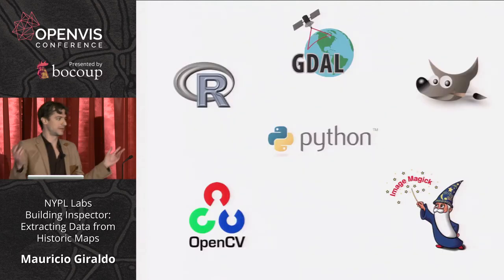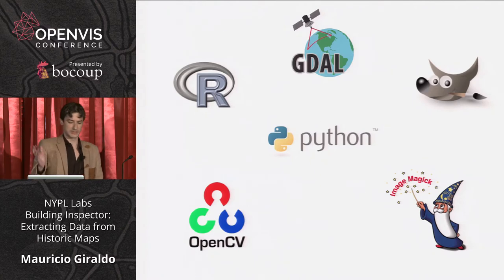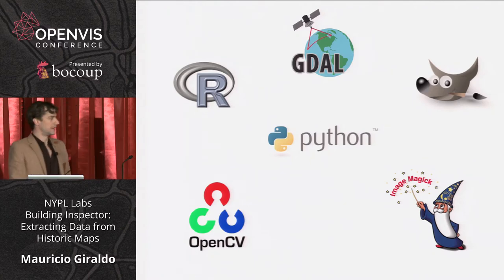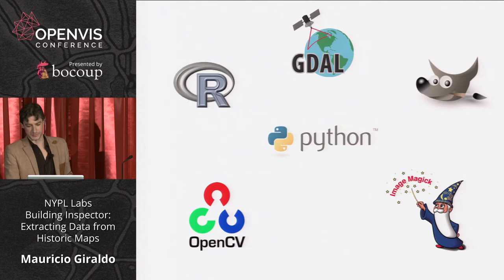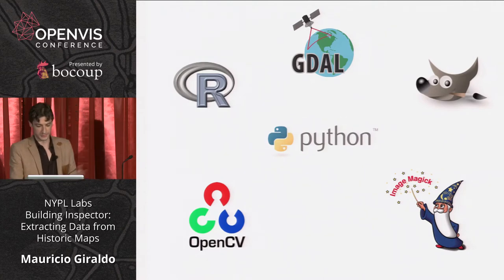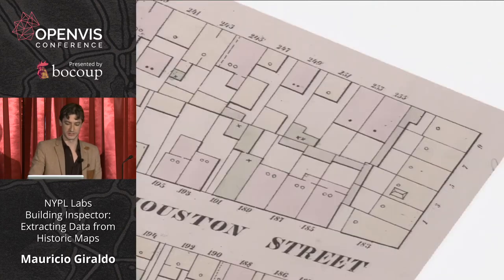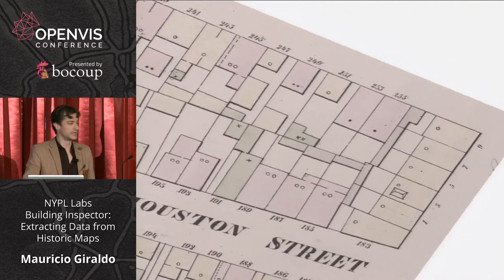This is basically a Frankenstein of spaghetti code articulated by a Python script — Detail, R, GIMP, ImageMagick, OpenCV. This is our reference map, the base image we're going to work with.